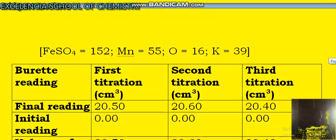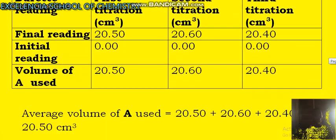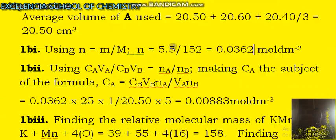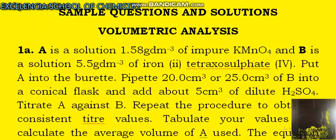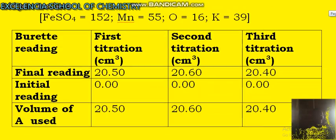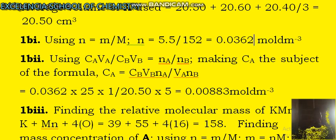Question number two says, calculate the concentration of A in mol/dm³. Some people would want to also use the same formula again, N equal to M over capital M. But we can't use it because the question says that A is a solution of 1.58 gram/dm³ of impure KMnO₄. Since the mass concentration we're going to use here is impure, we can't be using it. So we have to use CA VA over CB VB equal to NA over NB. We make CA the subject of formula before substituting. We've already calculated CB here. And we find CA, that is concentration of A, to be 0.00883 mol/dm³. As I said earlier, ensure you present your works in three significant figures.